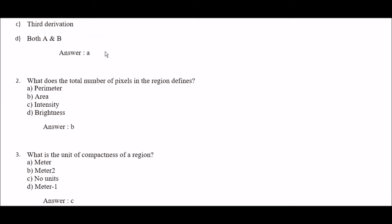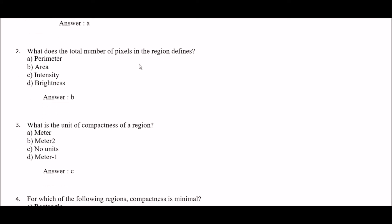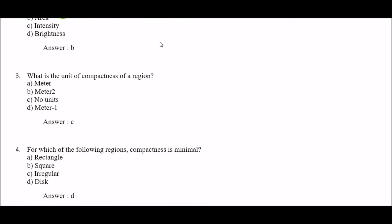Next question: what is the total number of pixels in the region defined? Option A: parameter, option B: area, option C: intensity, option D: brightness. The right answer is option B — area parameter defines the total number of pixels in the region.